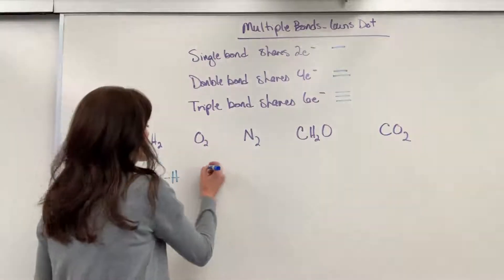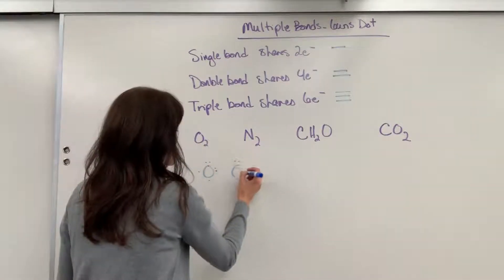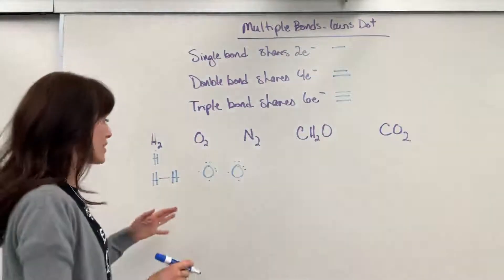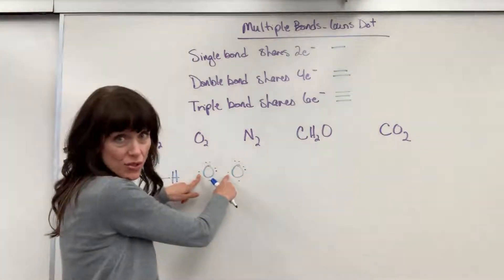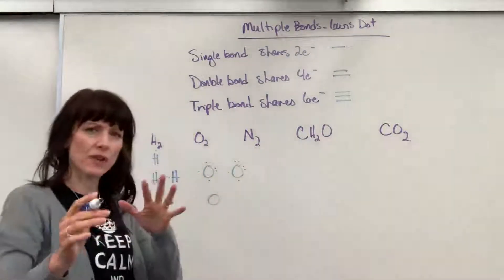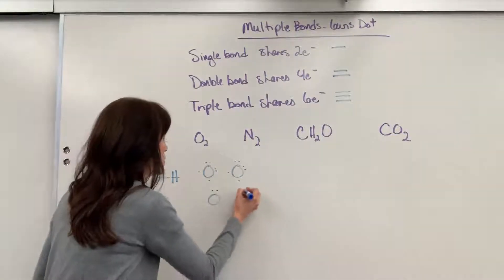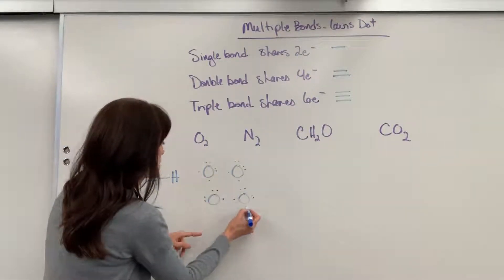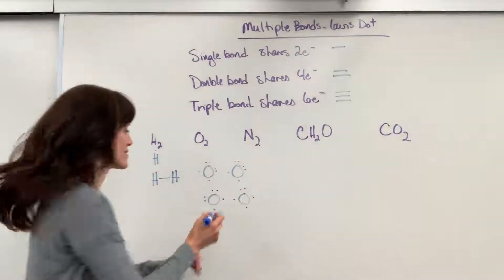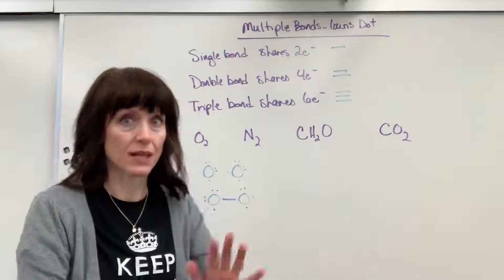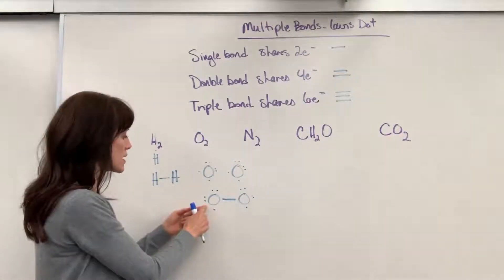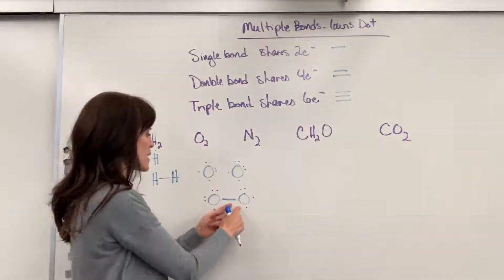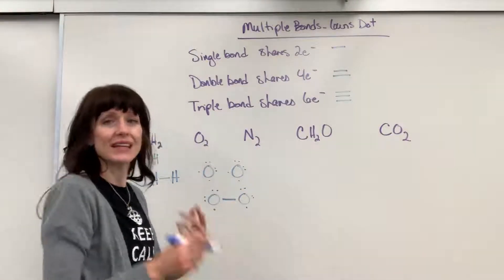Now let's look at oxygen. Oxygen has six valence electrons and needs two more to complete its octet. If we share two electrons between the two oxygen atoms — one bond — each oxygen senses seven electrons. We're close, but not quite at eight. So they each need one more electron.